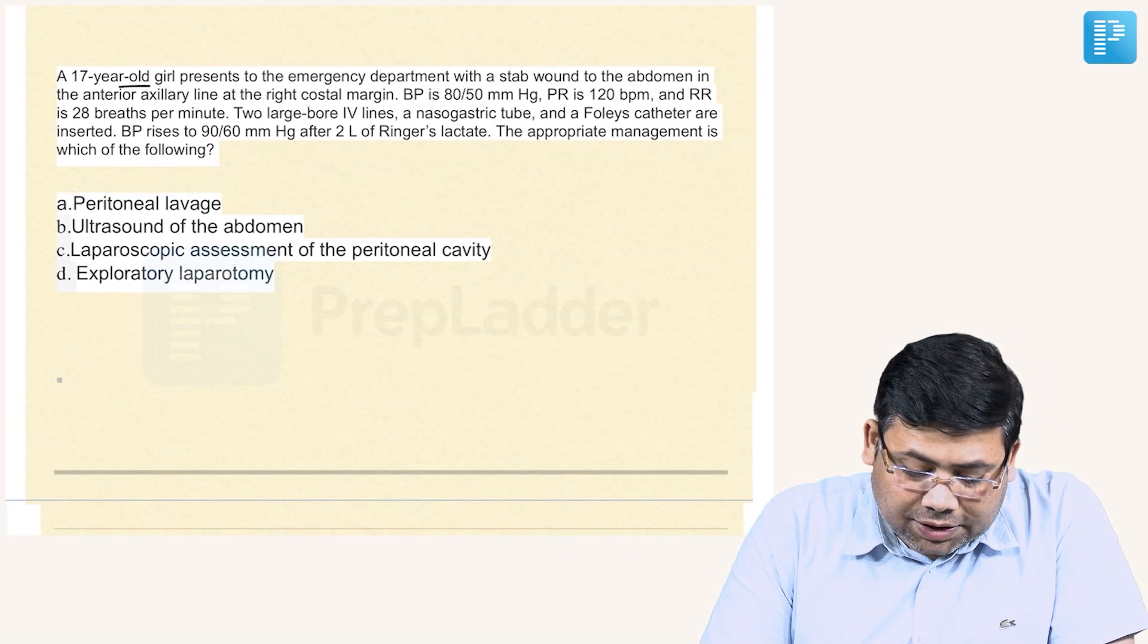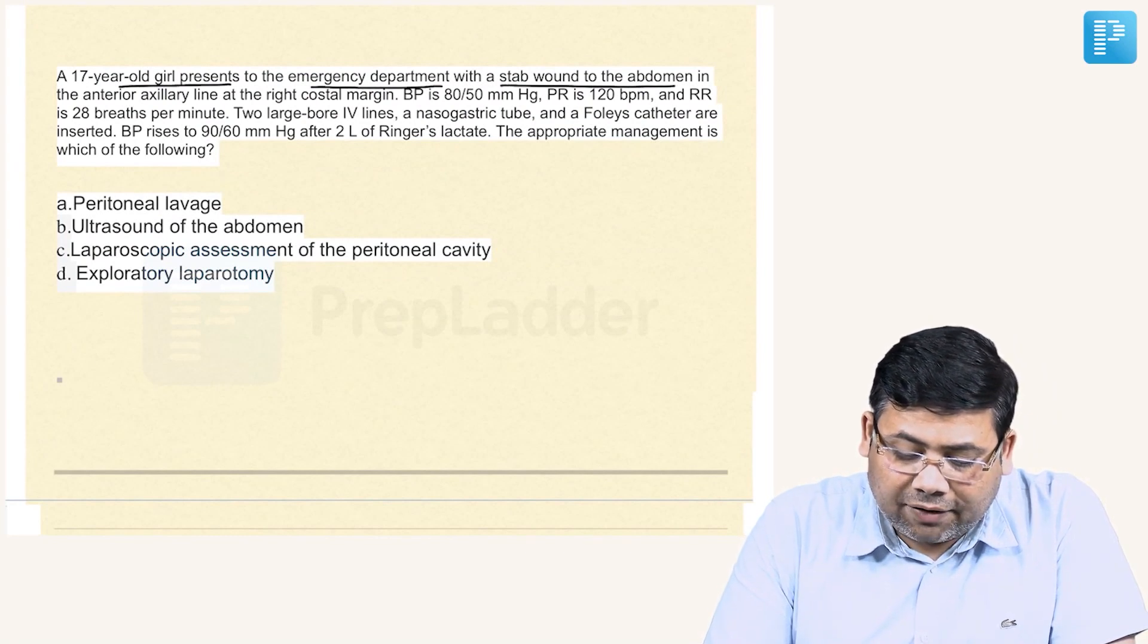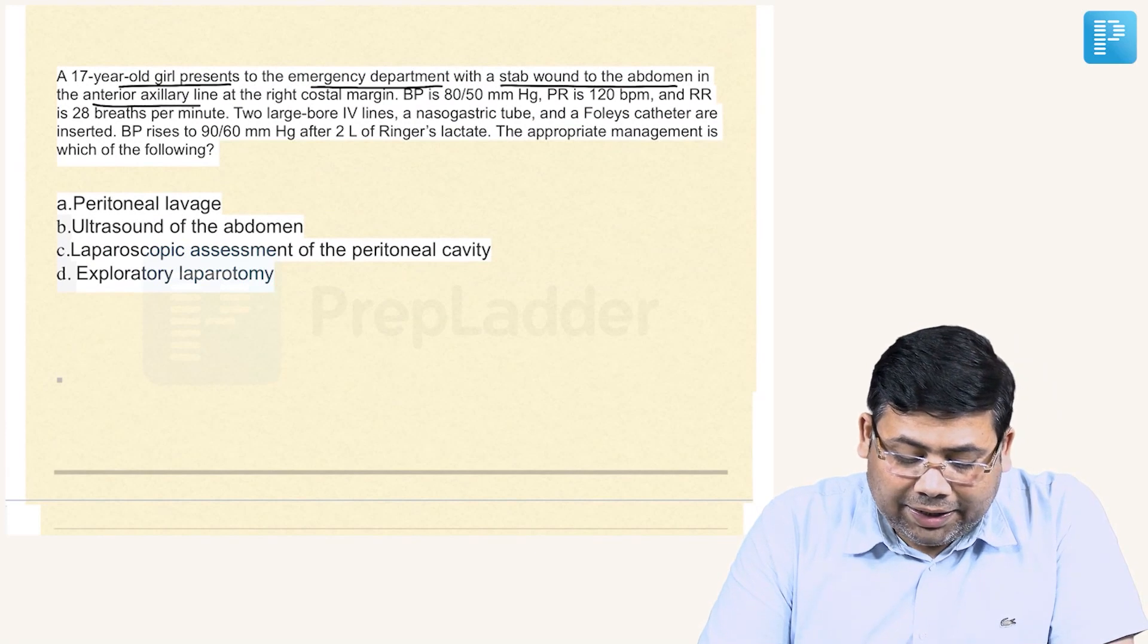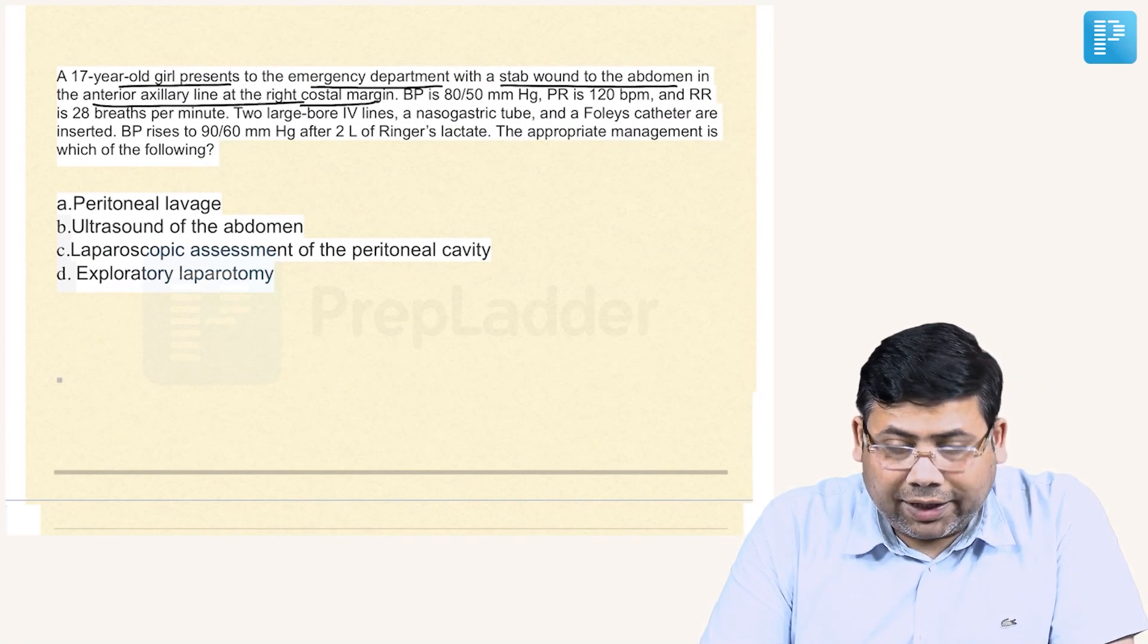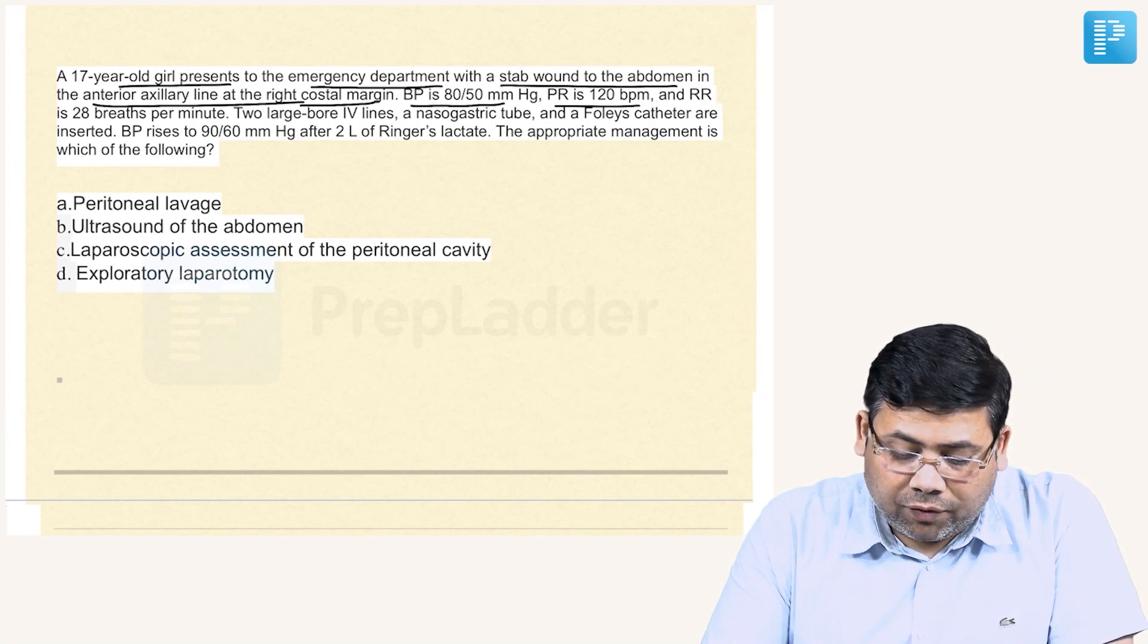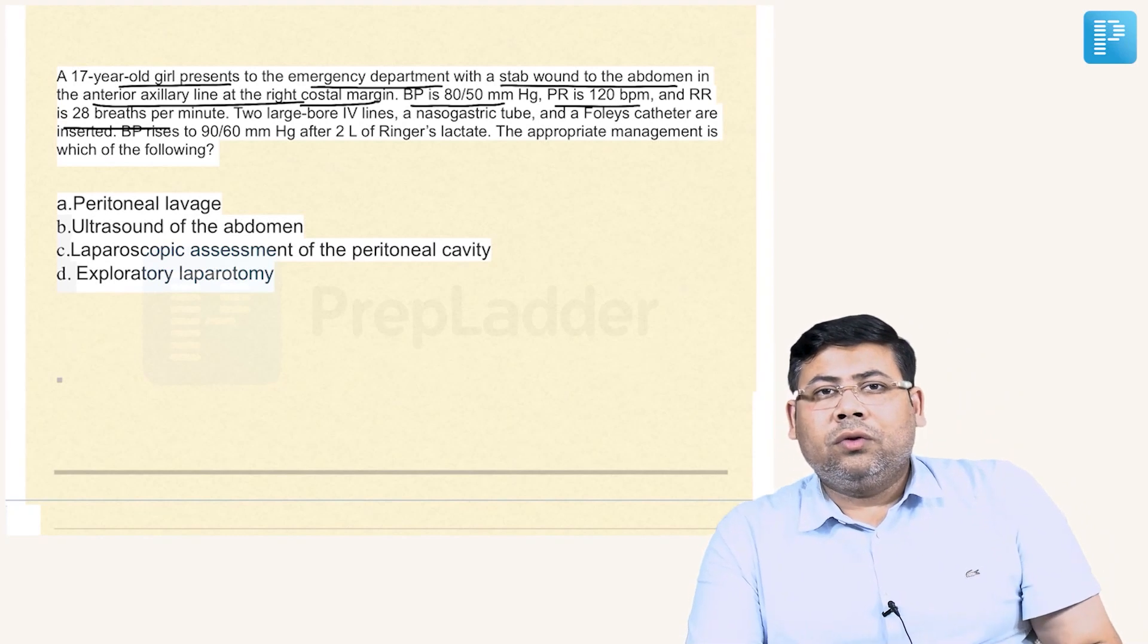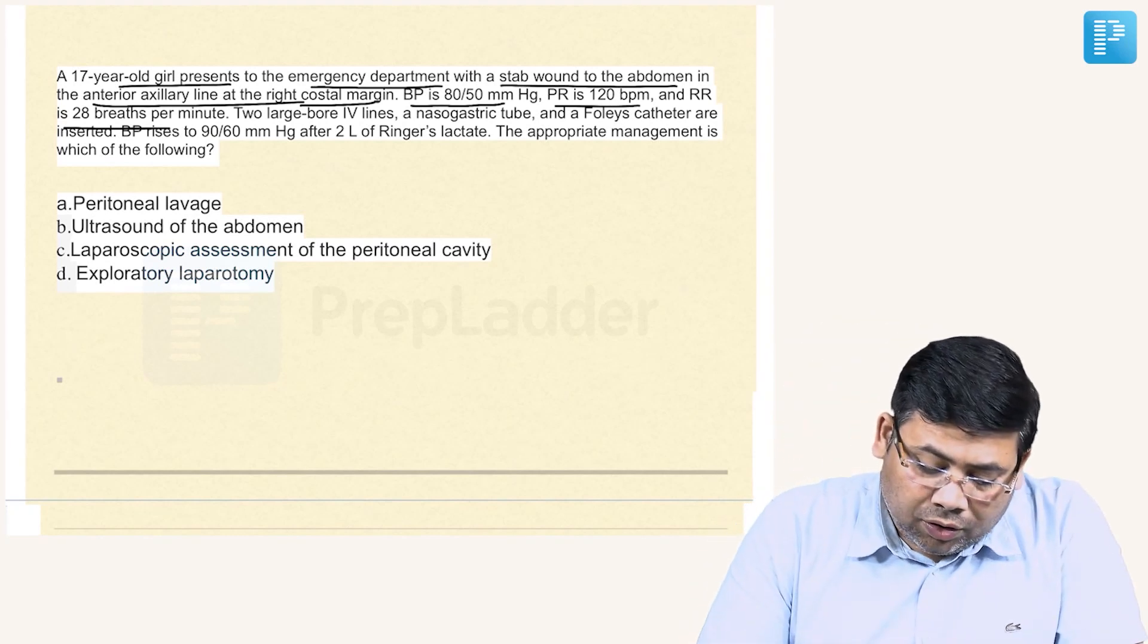Let us go to the next question. A 17-year-old girl presents to the emergency department with a stab wound to the abdomen in the anterior auxiliary line along the right costal margin. BP is 80/50, pulse is 120, respiratory rate is 28. That means the patient is going into a state of hypovolemic shock.